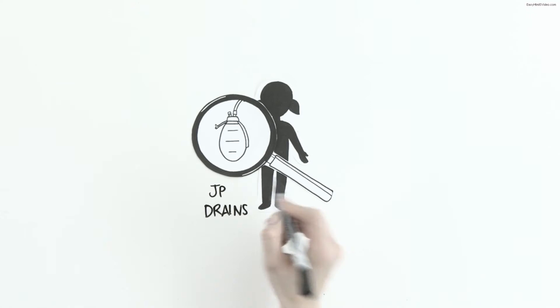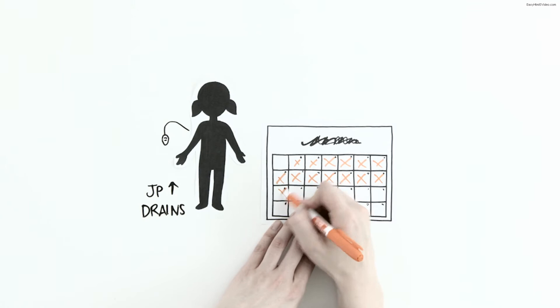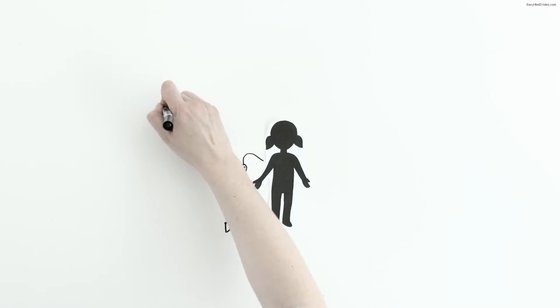Sometimes we call these JP drains. JP drains cannot be removed until the fluid draining from them has gone down to almost nothing. This may take several weeks in some cases. It's hard to predict ahead of time how long this will take, as every child is different.